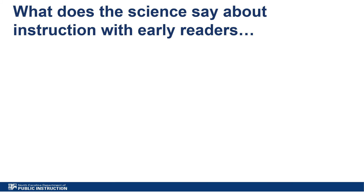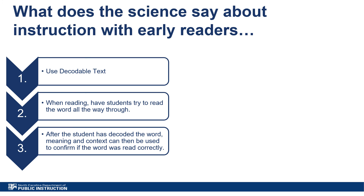So if those strategies are not effective, what should we do when working with our early readers in text? There are three simple things that can be done to support students in attacking unknown words. Number one: use decodable text — text that is sequenced to incorporate words consistent with the letter-sound patterns taught during phonics instruction. Number two: when reading, have students try to sound out the word all the way through, discouraging them from looking at the first letter and guessing based on the picture or first sound only. Number three: after the student has successfully decoded the word, they can then use meaning and context to confirm the word was read correctly.